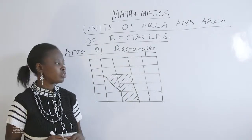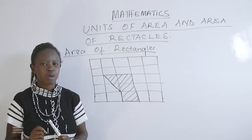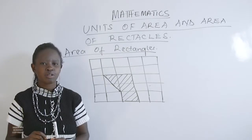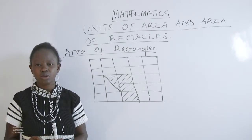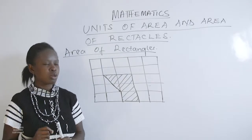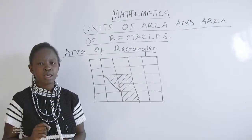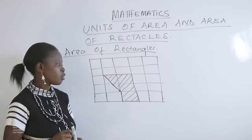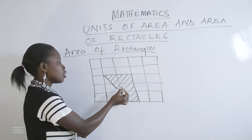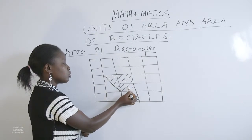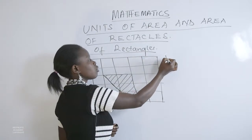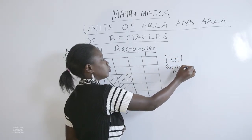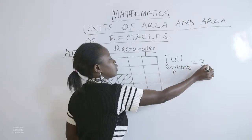The shaded region indicates the figure whose area we need to find. When you have a square grid and need to find the area, we calculate by counting. First, count the number of full squares. Then count the number of half squares. Divide the half squares by 2, then add both results. In this case, we have 3 full squares.